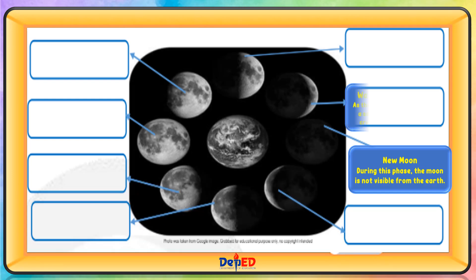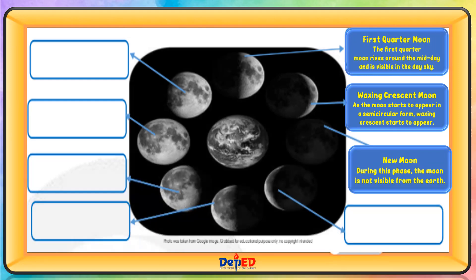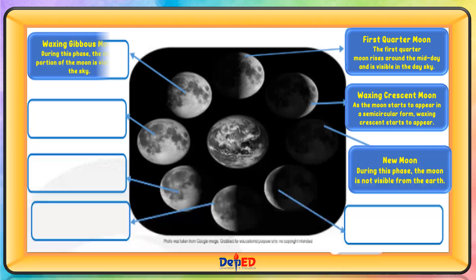Waxing Crescent Moon — as the moon starts to appear in semi-circular form, the waxing crescent starts to appear. First Quarter Moon — the first quarter moon rises around midday and is visible in the day sky. Waxing Gibbous Moon — during this phase, the most portion of the moon is visible in the sky.